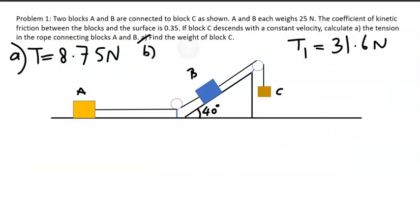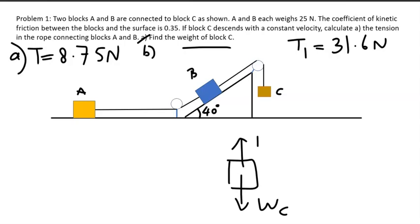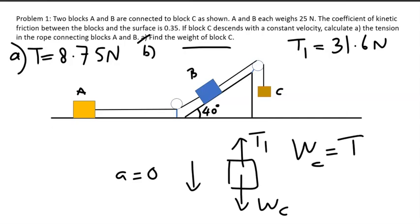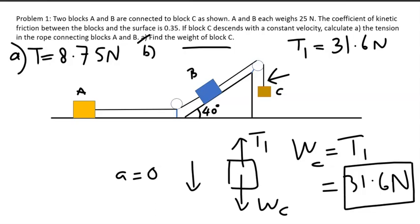Now we can easily find the weight of block C. Block C is hanging vertically with tension T1 acting upward and its weight acting downward. Since acceleration is zero, the weight of C equals T1. We found T1 = 31.6 newtons, so the weight of block C is also 31.6 newtons. That is the answer for part B.